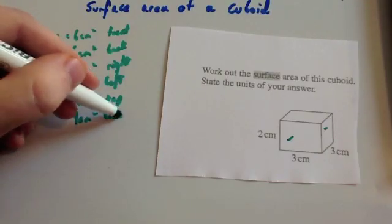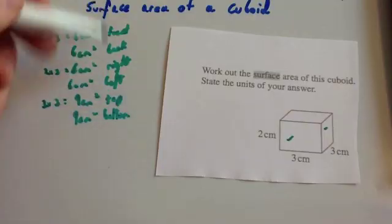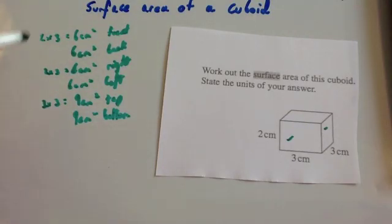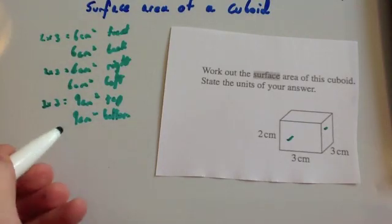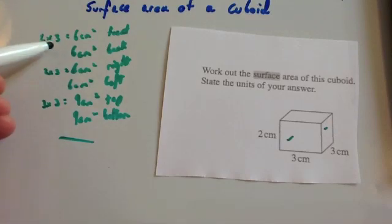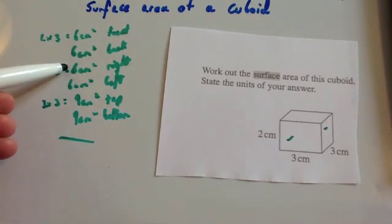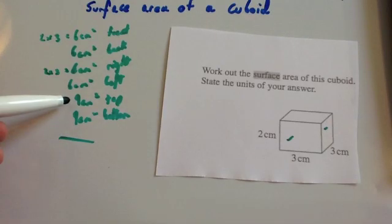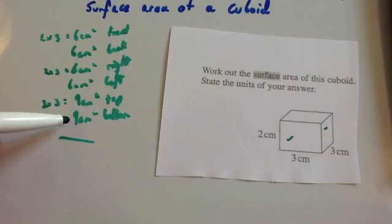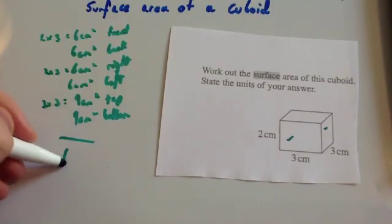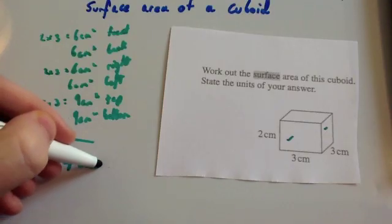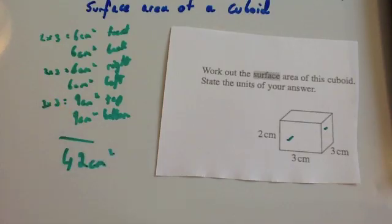That way you can check that you've got all six faces, then you just need to add them up. Six plus six is twelve, plus six is eighteen, plus six is twenty-four, plus nine is thirty-three, plus nine is forty-two. So the total surface area is forty-two centimetres squared.